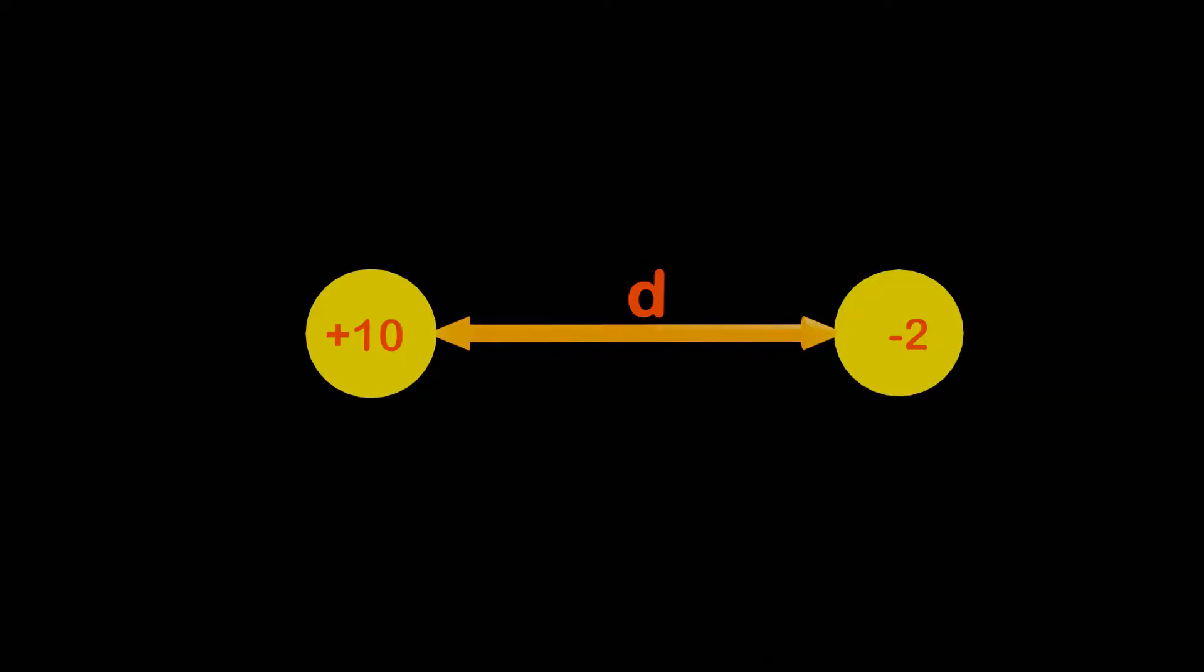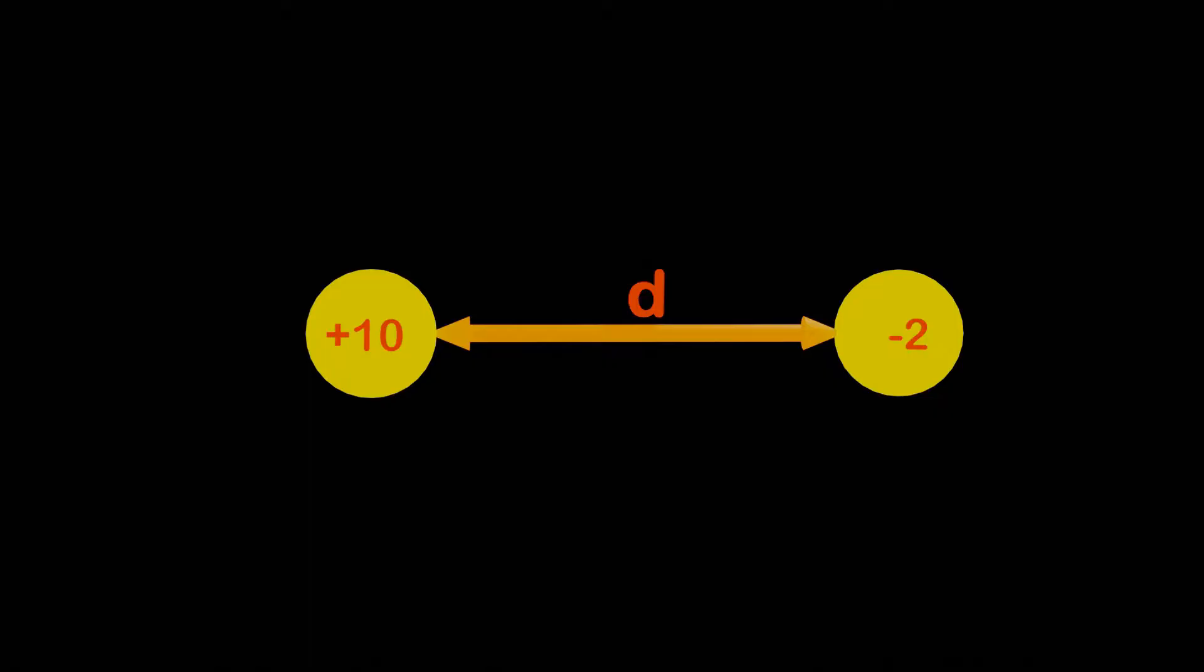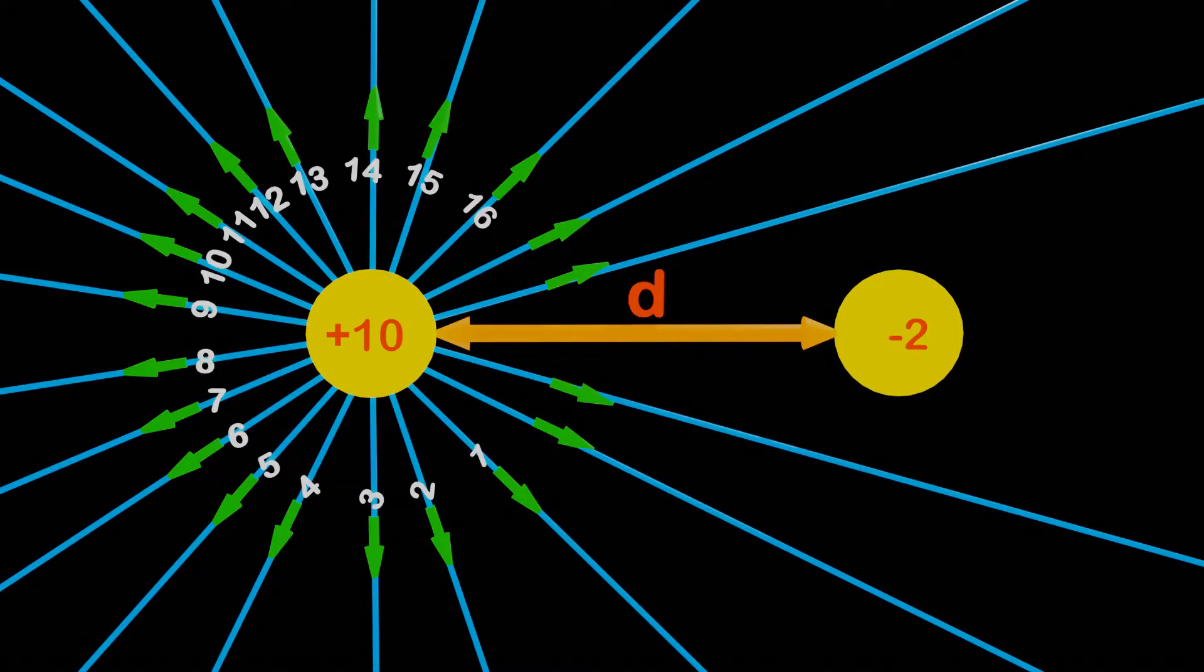Let's assume that there are 2 electric field lines per unit charge. Based on this assumption, the positive charge of magnitude 10 will have 20 radially outward electric field lines. And we know that electric field lines originate from positive charges and terminate on negative charges.